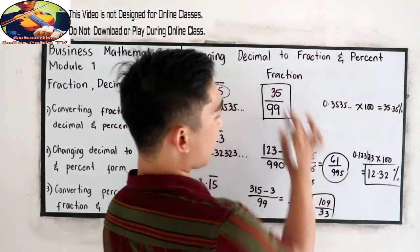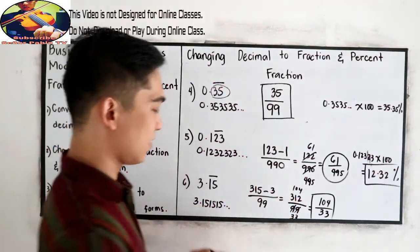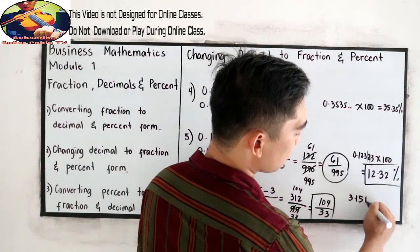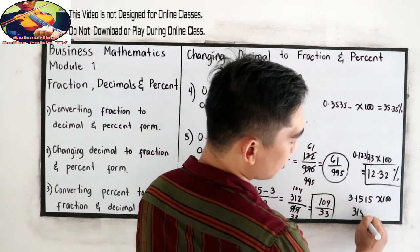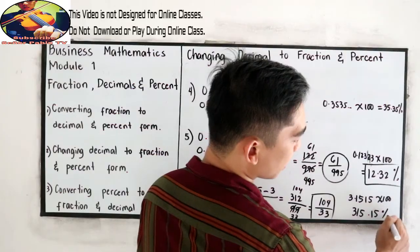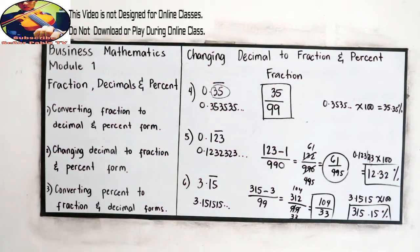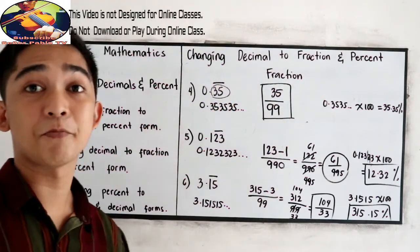Will be our fraction form. And multiply. So that is 3.15, 15 times 100. So that is 315.15%. Okay, that's on how to convert decimal to fraction and percent. Bye. Thank you.